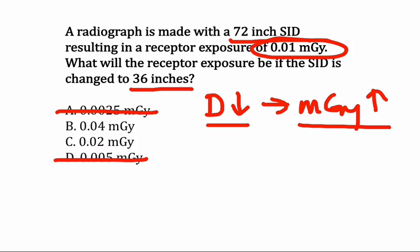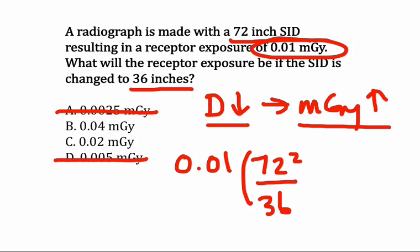Using the equation that we've already talked about, we start with our initial exposure, 0.01 milligray, and we multiply it by the squared ratio of the distances. And again, it's important to remember that this exposure is going to increase. The only way to do that is to insert our distance values like this, 72 squared over 36 squared,